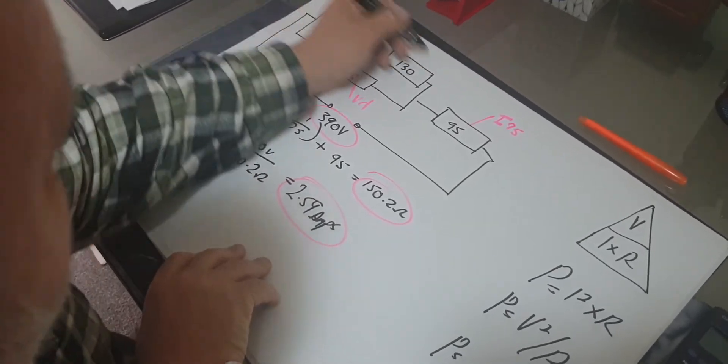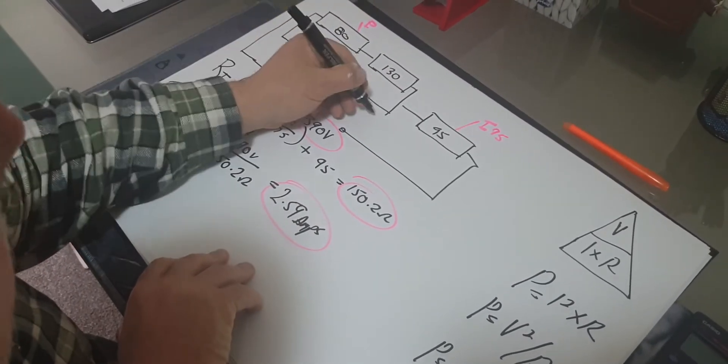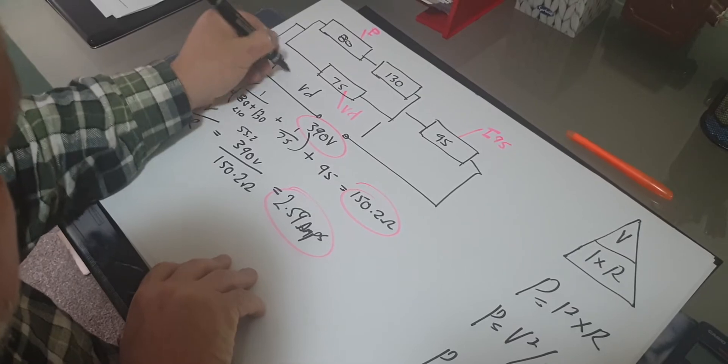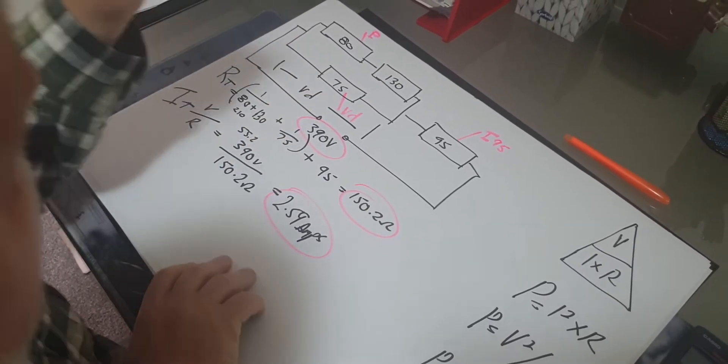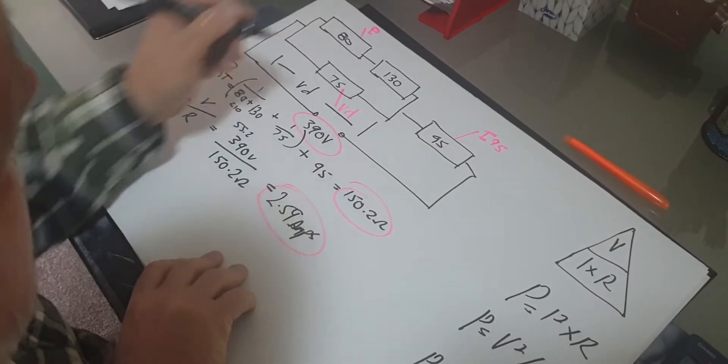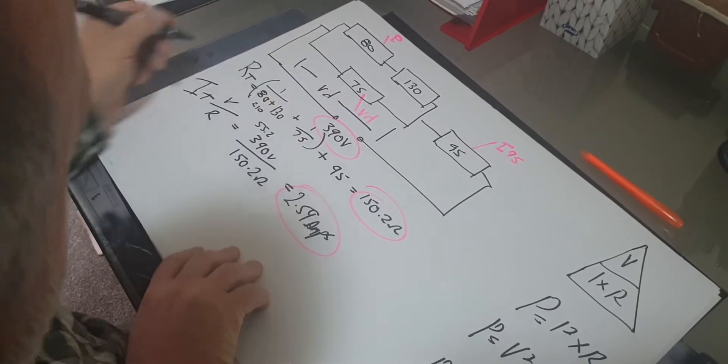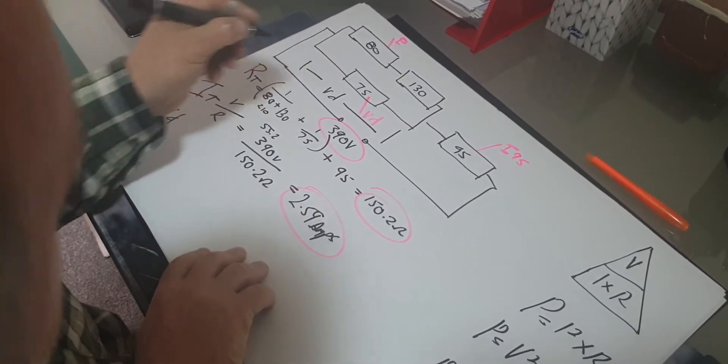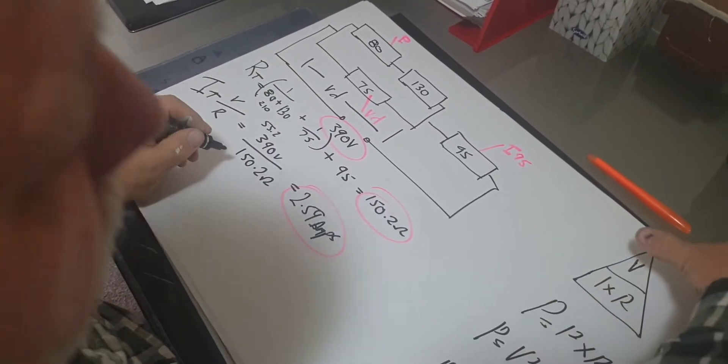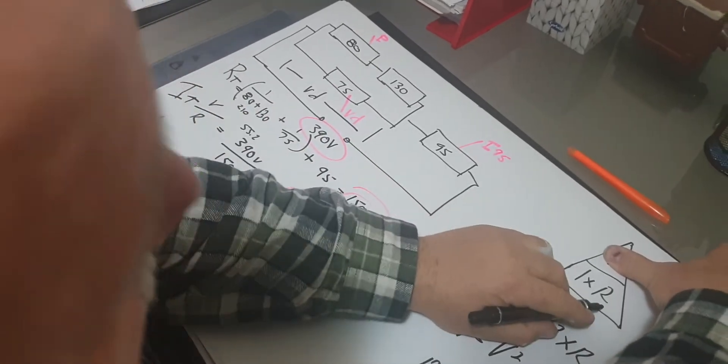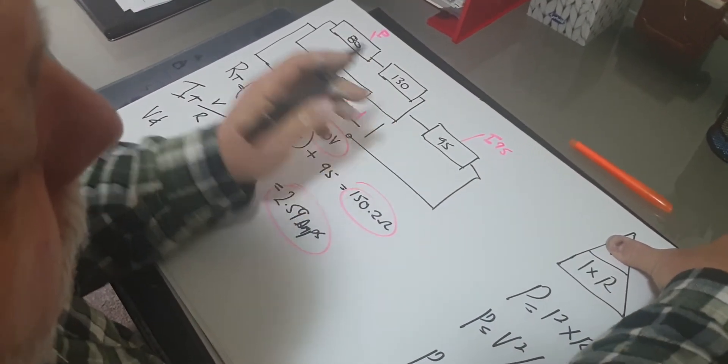Or two resistors if it was two in parallel. You must get the voltage drop. So voltage drop, what's that going to equal? Over here, voltage equals I times R. Ohm's law. That's the basics of everything. I times R.